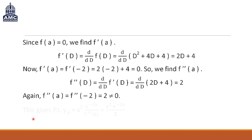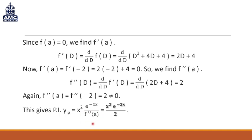We have got a non-zero value. This gives us that the particular integral is x² multiplied by e^(−2x) — which is R — divided by f″(a). Substituting f″(a) = 2, the particular integral for this differential equation is x² · e^(−2x) / 2.